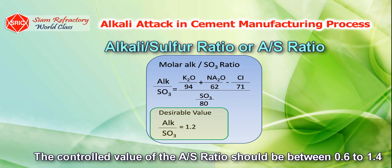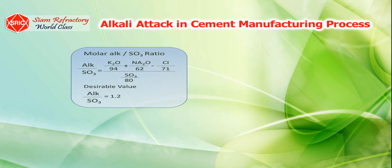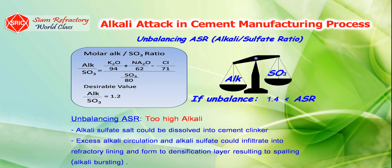The controlled value of the A-S ratio should be between 0.6 to 1.4. Using raw materials with high sulfur or alkali content may unbalance the A-S ratio. When the alkali substance is too high, this causes serious reactions to the refractory products, resulting in severe cracking, which shortens the service life of the refractory products. This phenomenon is called alkali attack, or alkali bursting.